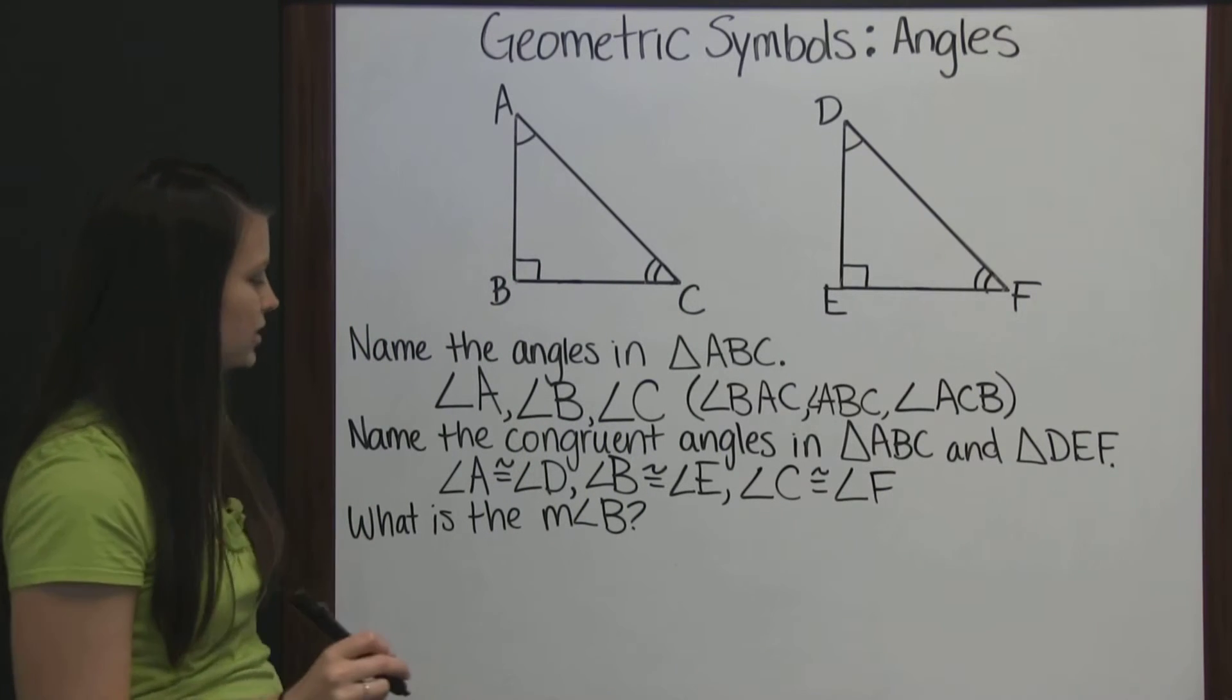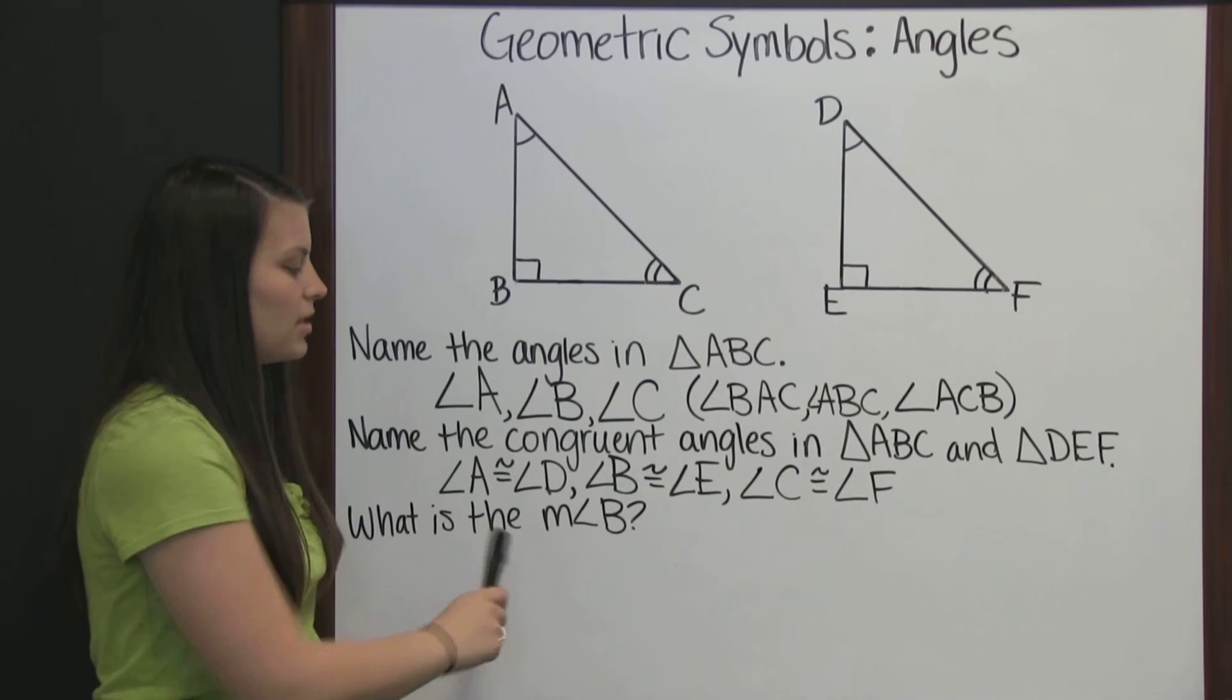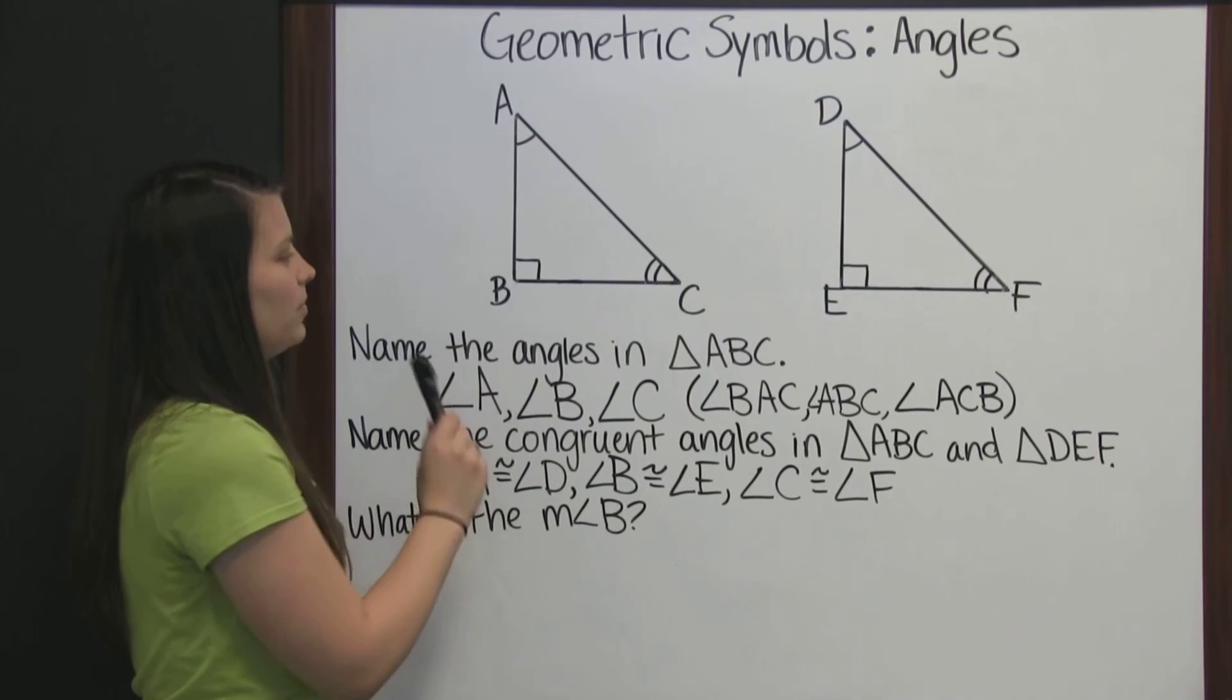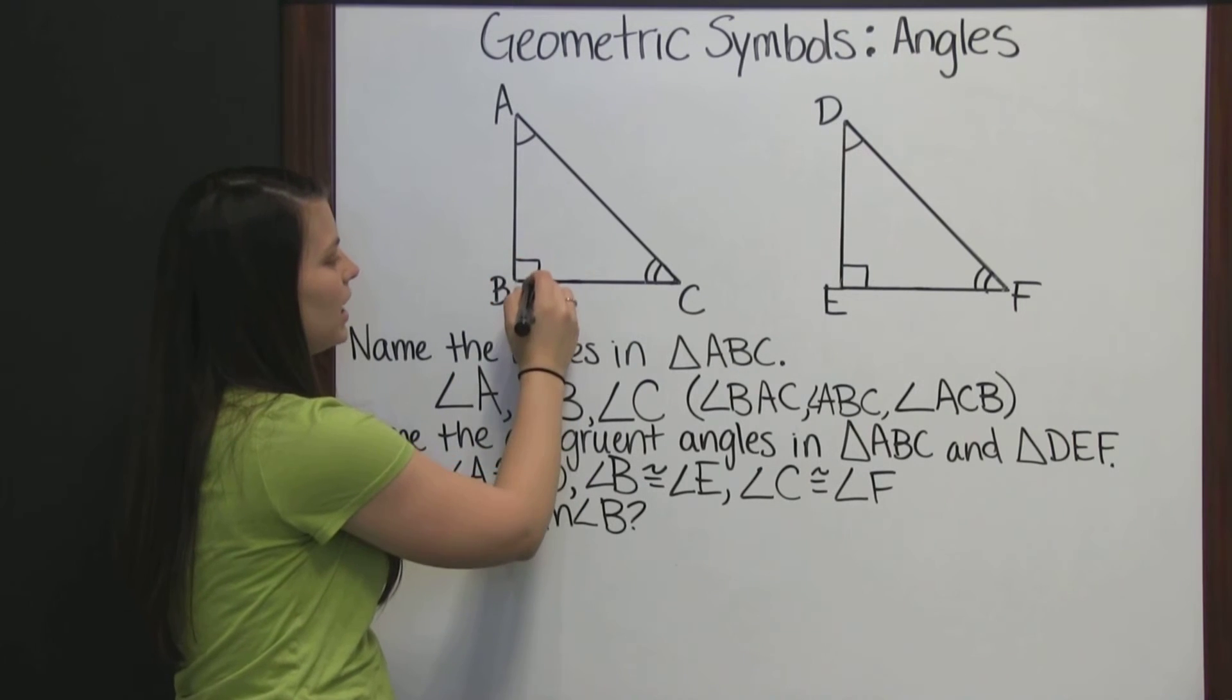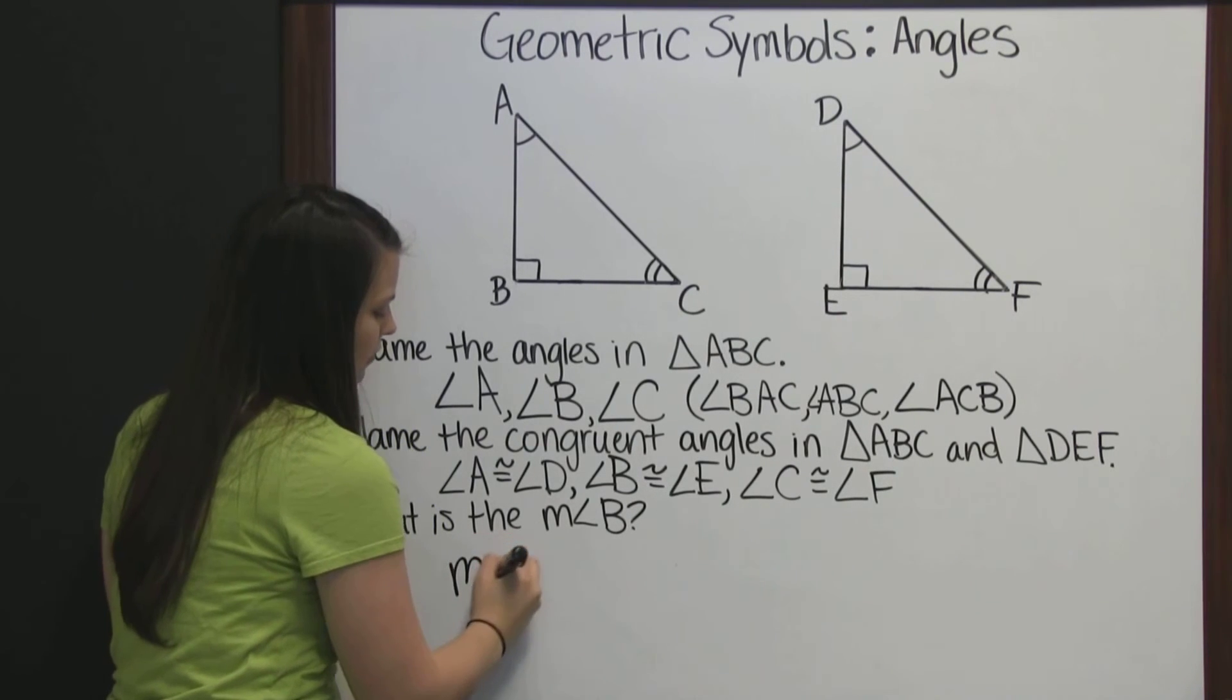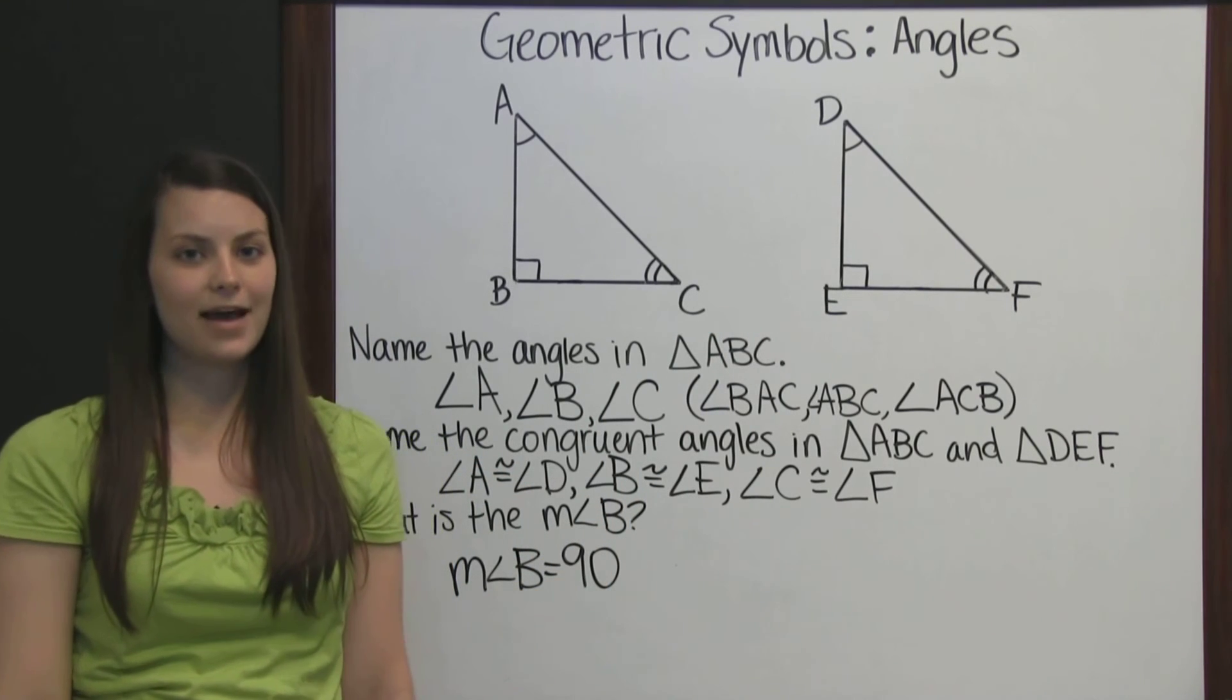Now this last question says, what is the measure of angle B? This M stands for measure. When you see the M, that means they want the degree, how many degrees are in the angle. Angle B, even though there isn't a number there, this box means that angle B measures 90 degrees. So the measure of angle B equals 90. And the measure of angle E would also be 90 degrees.